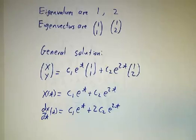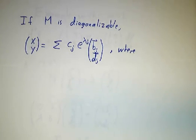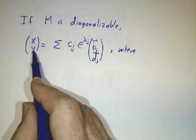Okay, now this gives a hint about how things behave in general. In general, if M is diagonalizable, then the solutions to our first-order system...